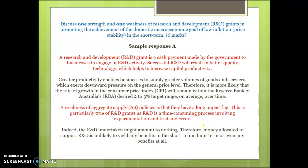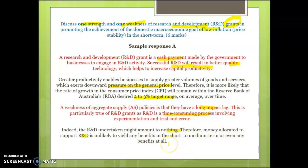Here's an example question to show the difference between a strong answer and a not-so-strong answer: discuss one strength and one weakness of research and development grants in achieving the domestic macroeconomic goal of low inflation in the short term. A research and development grant is a cash payment. Successful R&D should help improve the quality of capital or technology and improve productivity, enabling businesses to supply greater volumes of goods and services, putting downward pressure on prices and helping achieve the goal of price stability of 2% to 3% on average over time. A weakness is that they have a long impact lag — it's a time-consuming process involving trial and error and might amount to nothing, meaning money allocated is unlikely to yield any benefit in the short term, medium term, or even at all.